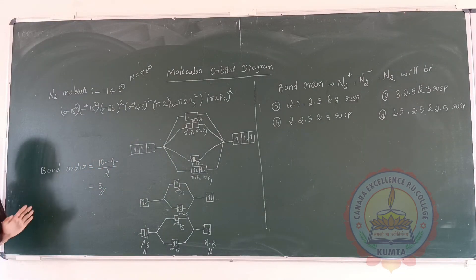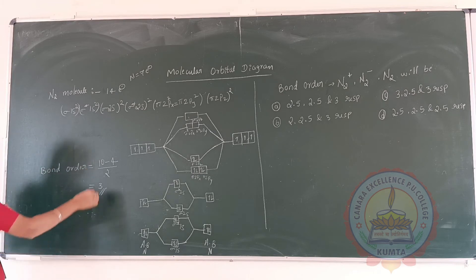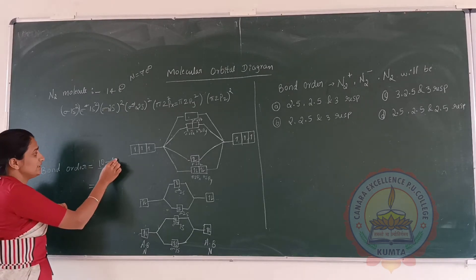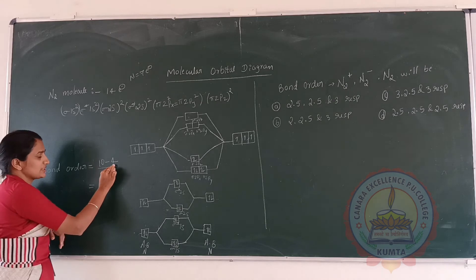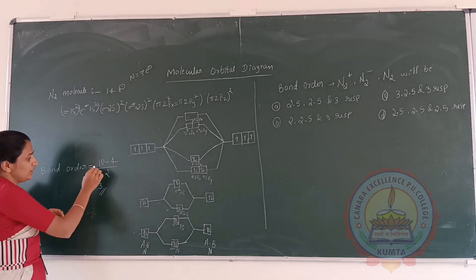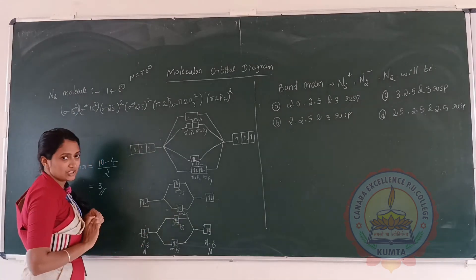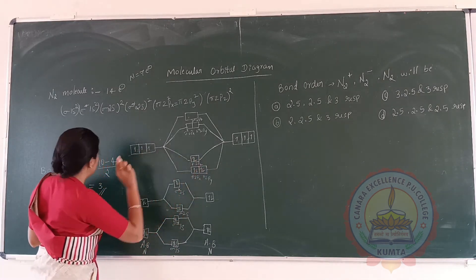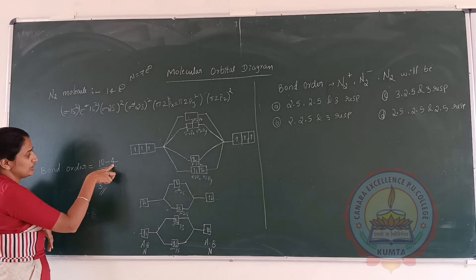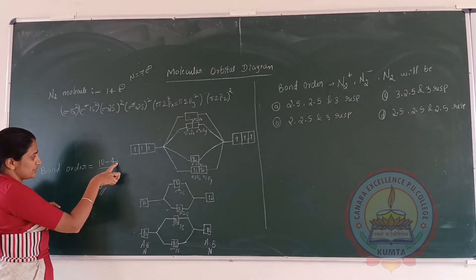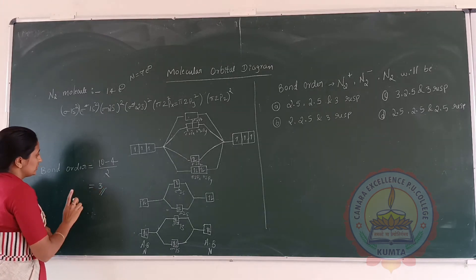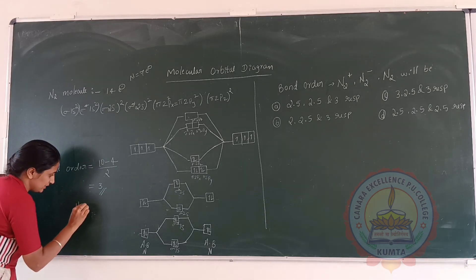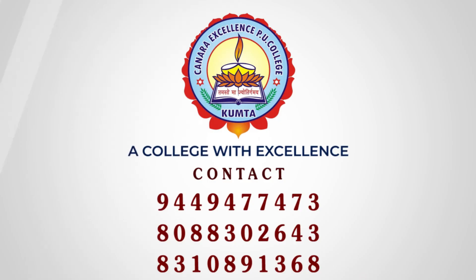We can also calculate the bond order. Bond order equals total number of electrons present in bonding molecular orbital minus total number of electrons present in anti-bonding molecular orbital, divided by 2. There are 10 electrons in bonding molecular orbital and 4 electrons in anti-bonding molecular orbital. This gives bond order equal to 3. Nitrogen is connected with another nitrogen with 3 bonds.